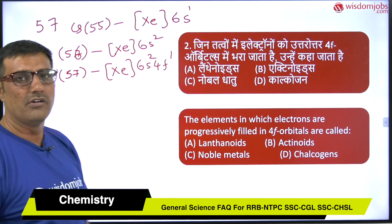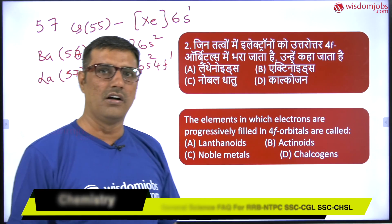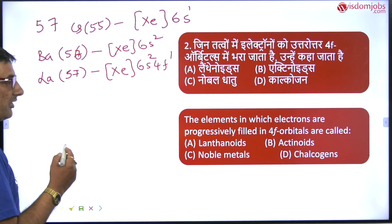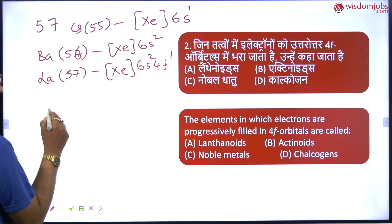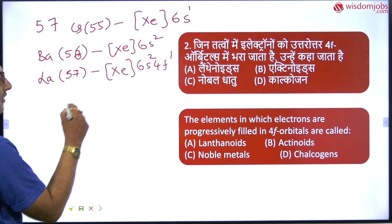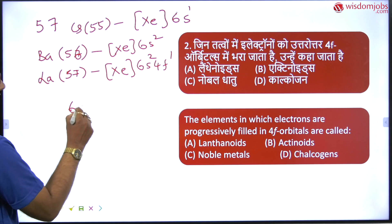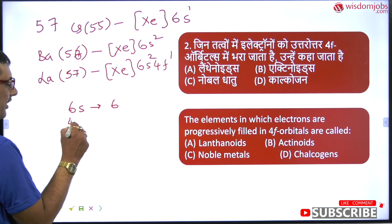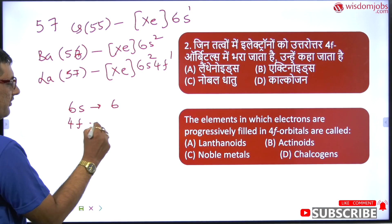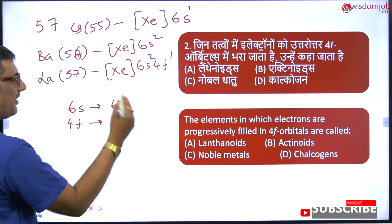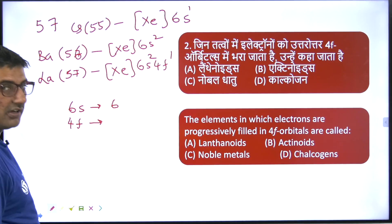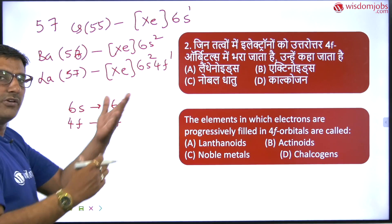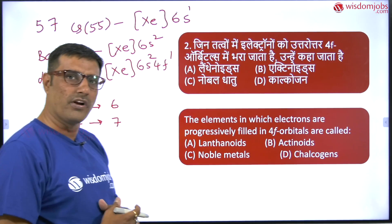So after 6s comes the 4f orbital. Why 4f? If you observe the n+l value of 6s: it is 6+0 which equals 6. And for 4f it is 4+3 which equals 7. So after 6s, the next higher n+l value brings you to the 4f orbital.